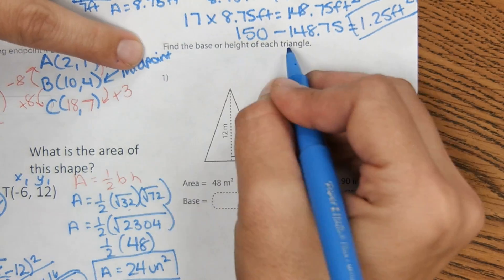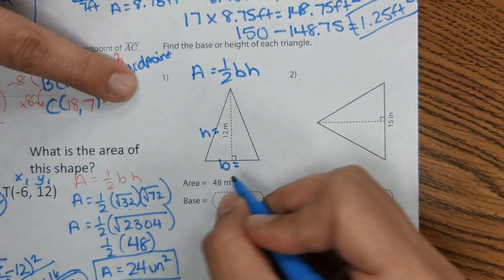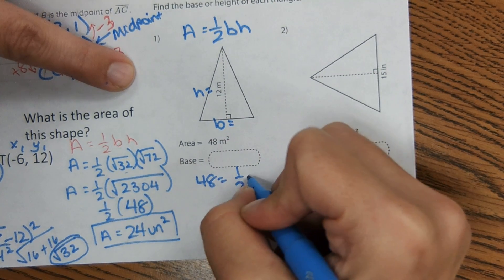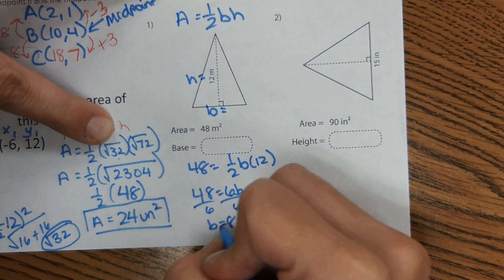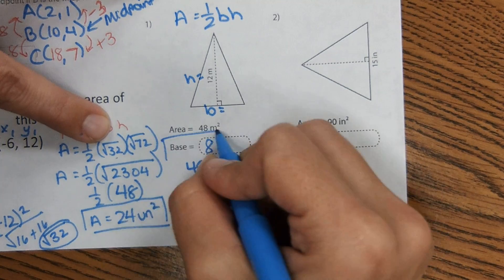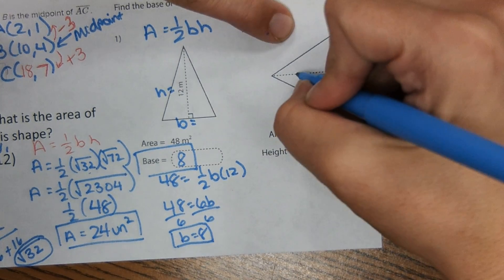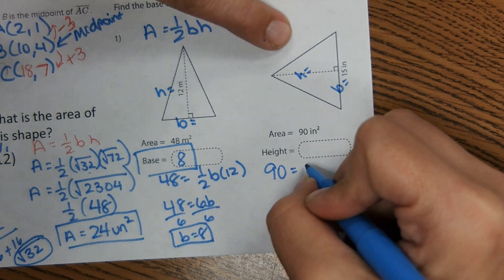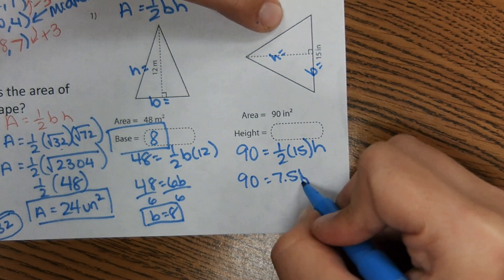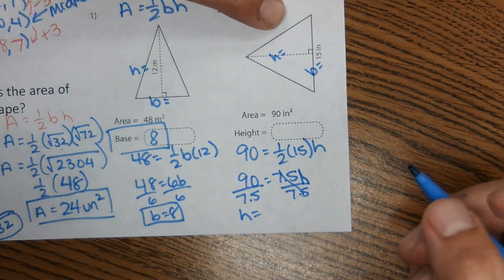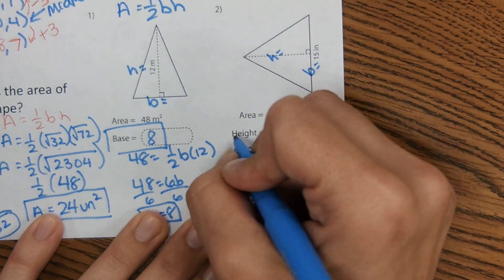And then over here it gets easy again. Find the base or height of each triangle. So area of a triangle is one-half base times height. They don't give us the base. They gave us the height and they gave us area. So area 48 equals one half base we don't know, height is 12. 48 equals 6B, B equals 8. Same thing here. This time they gave us base, we don't know height. 90 equals one-half 15 height we don't know. And the height equals 12. Okay we're done for real.